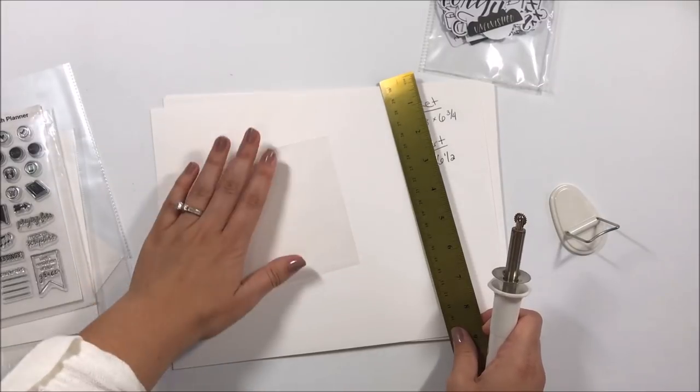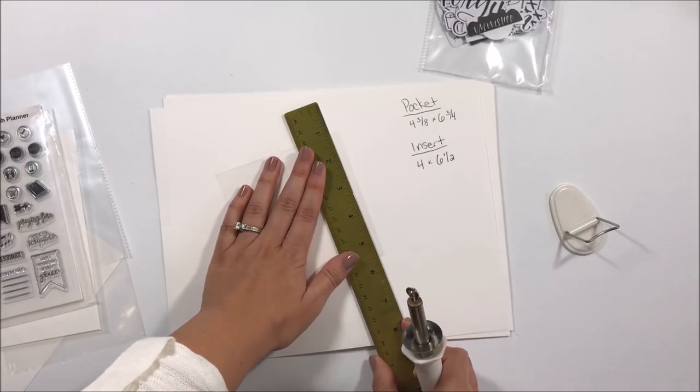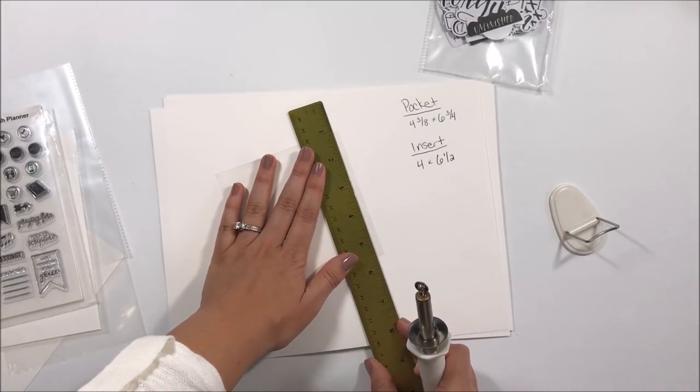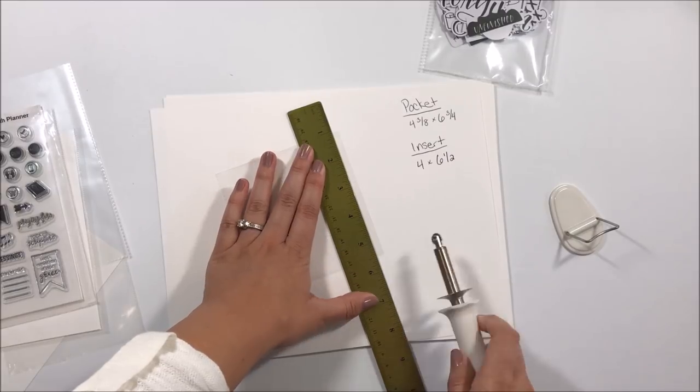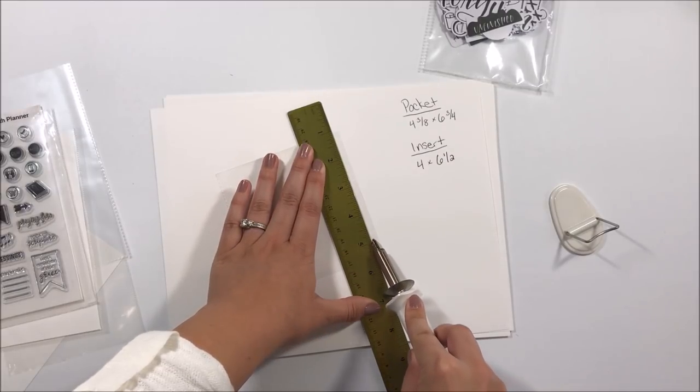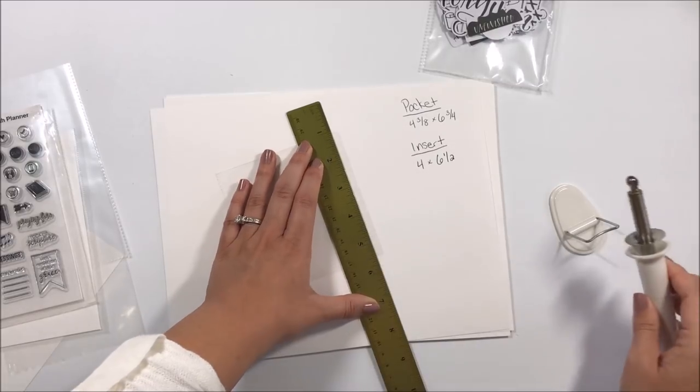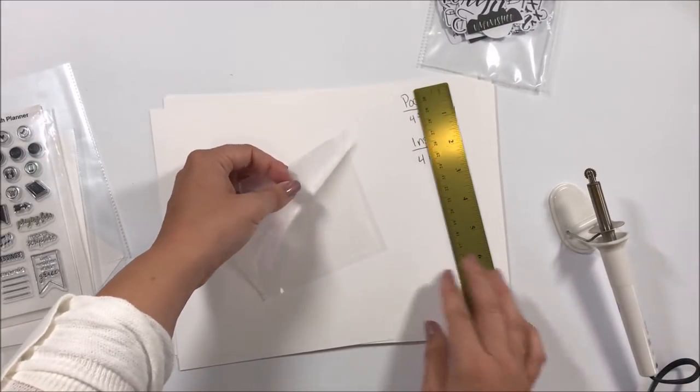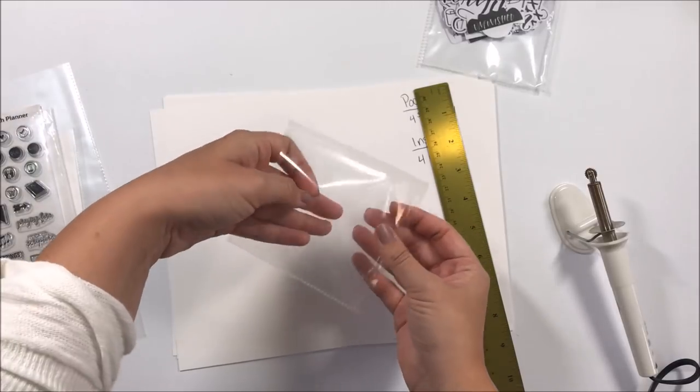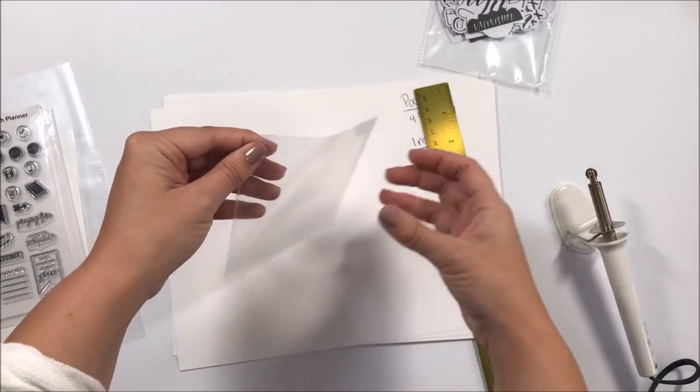Okay, and then that other open edge. And this doesn't have to be as precise because you're not trying to fit a stamp set in there, you're just going to put your loose die cut pieces. So now I have a pocket. If you wanted you could close the top with washi tape that way they don't fall out.